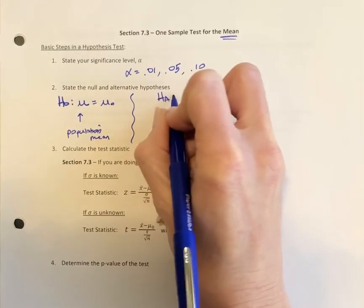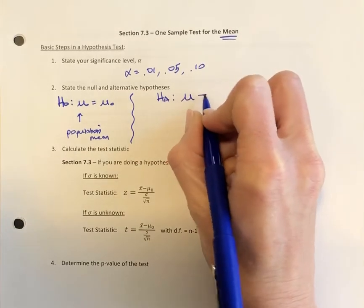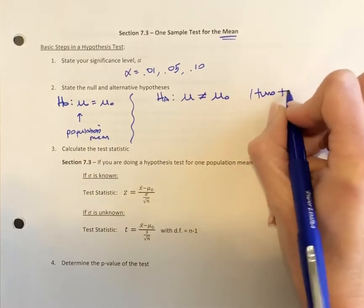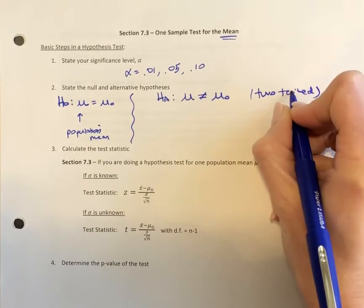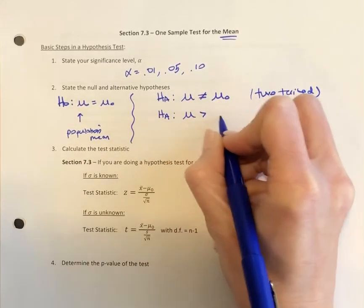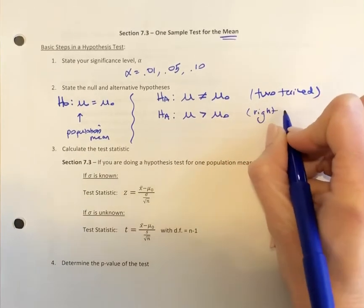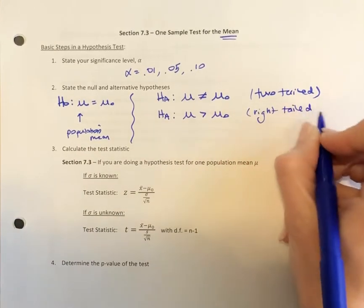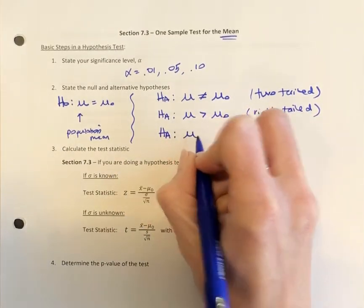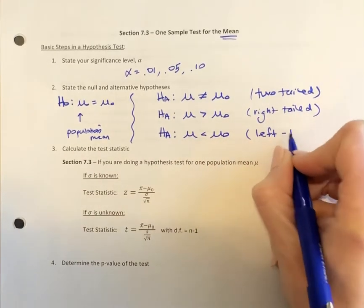Then we choose between our three alternative hypotheses. The first is that the mean is not equal to mu-sub-zero — that's a two-tailed test. Another option is that the mean is greater than mu-sub-zero, which gives us a right-tailed test. And the third option is that the mean is less than mu-sub-zero, which would be a left-tailed test.